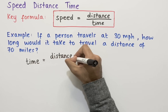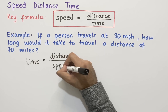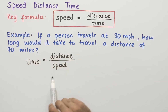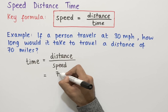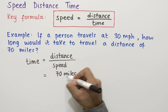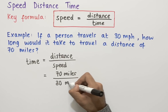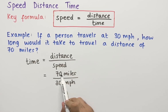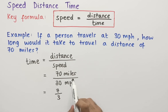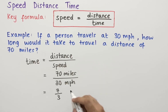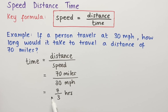In this question, the distance is equal to 70 miles and the speed is equal to 30 miles per hour. Substituting those values gives us 70 miles over 30 miles per hour. 70 divided by 30 simplifies to 7 over 3. The miles in the numerator cancel with the miles in the denominator, leaving us with hours.